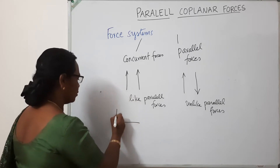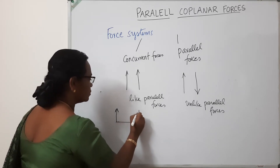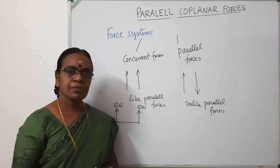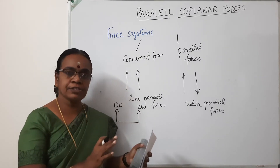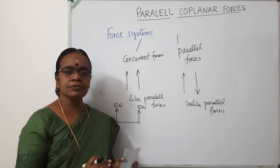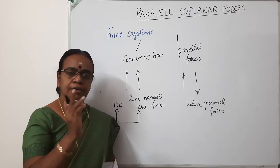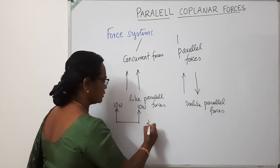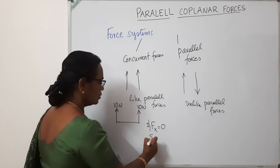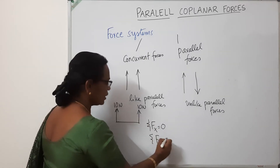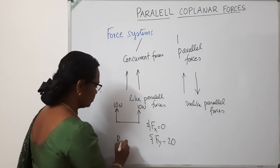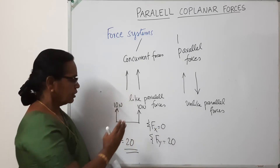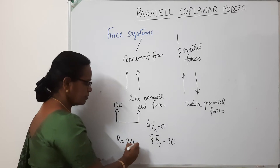Suppose there are two like parallel forces on a body — say 10 Newton and 10 Newton acting upward. What about the resultant of these two forces? The resultant is found as sigma Fx (horizontal) and sigma Fy (vertical). Here there are only vertical forces, so sigma Fx equals zero. Sigma Fy equals 10 plus 10 equals 20. Therefore, the resultant equals root of (0² + 20²) = 20 Newton. In other words, the sum of the two vertical forces is the resultant force.